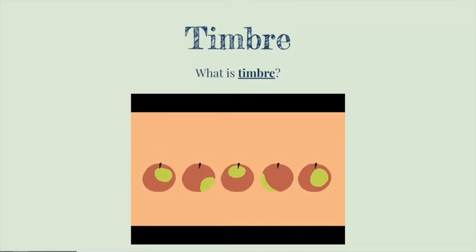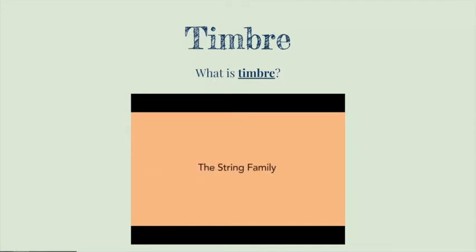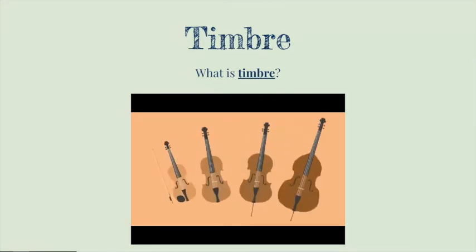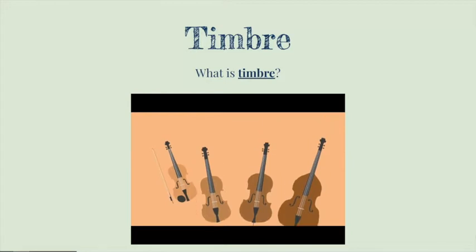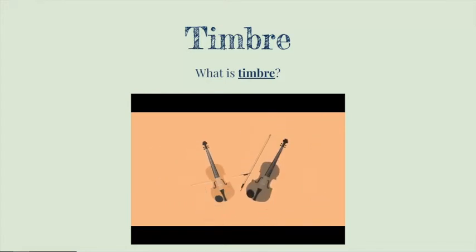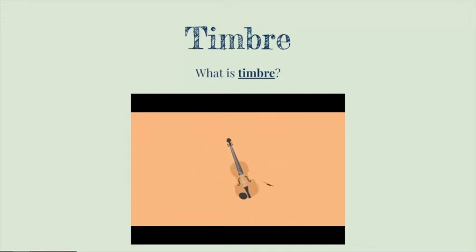Same thing goes for sound sources. One category of timbre we use quite often is strings. Inside of the string family, we have violins, violas, cellos, and double basses. They have similar timbres and tones in some ways, but each one is distinct. When comparing two different violins, one might have a very bright sound, while the other is more muted and dark. Even when playing one violin, we can produce different timbres by bowing a different way.